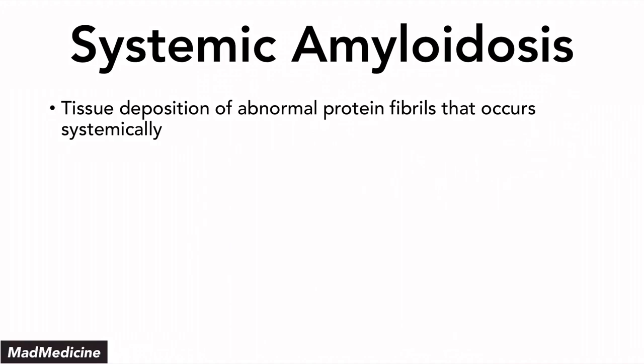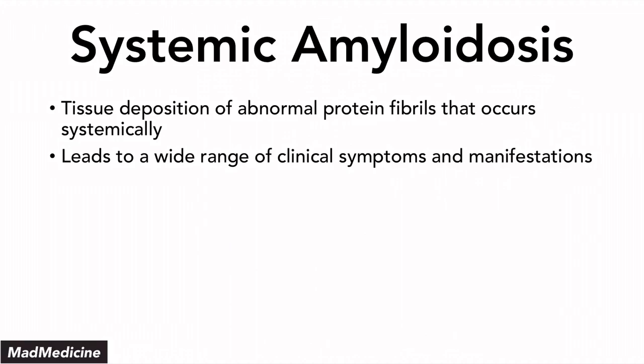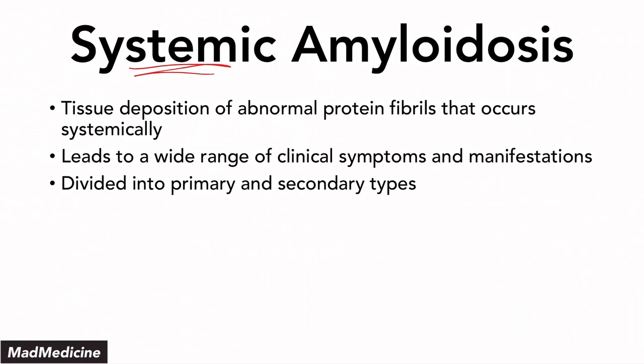Systemic amyloidosis is when you have tissue deposition of an abnormal protein occurring systemically across the body. This leads to a very wide range of clinical symptoms and manifestations. You can divide systemic amyloidosis into primary and secondary types based on the protein type that gets deposited.